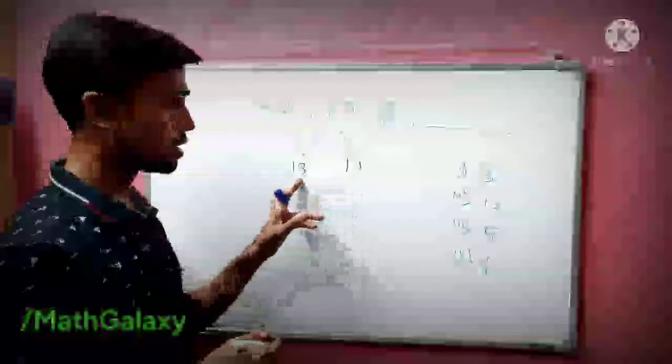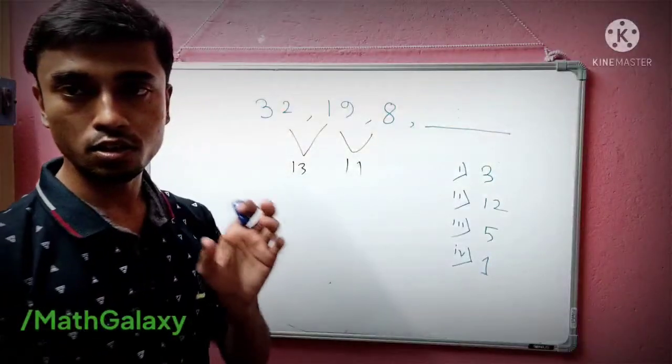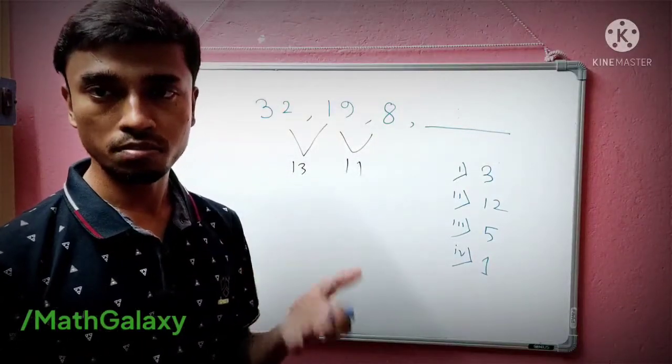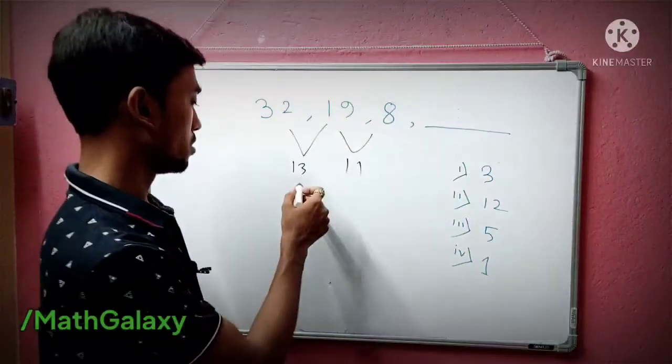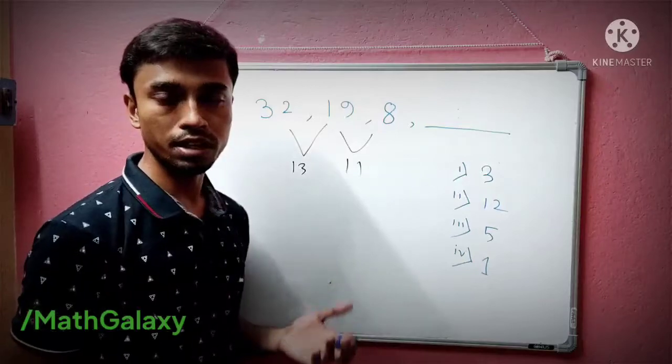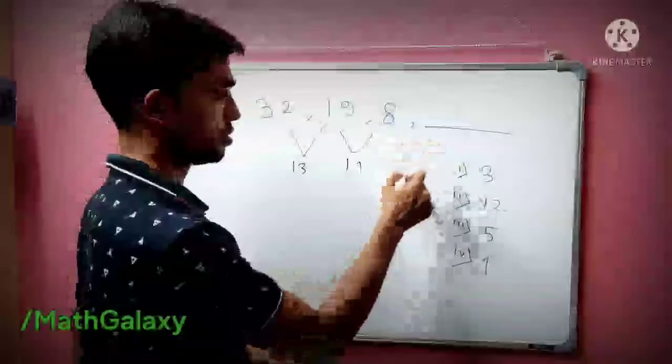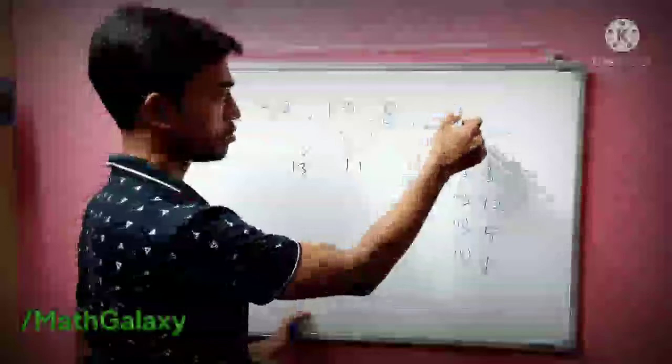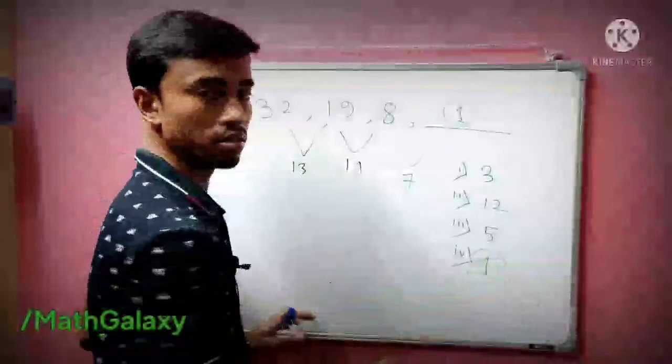11 and 13 are consecutive primes. Before 13 there is 11, so before 11 what is the prime? Before 11 there is only one prime which is 7. So if you subtract 7, then it is 1, and this 1 should be the answer.